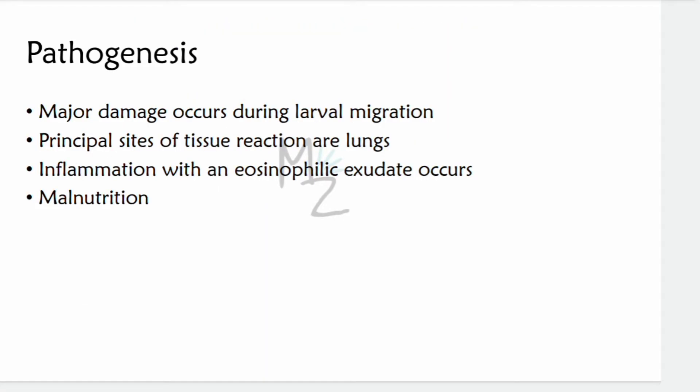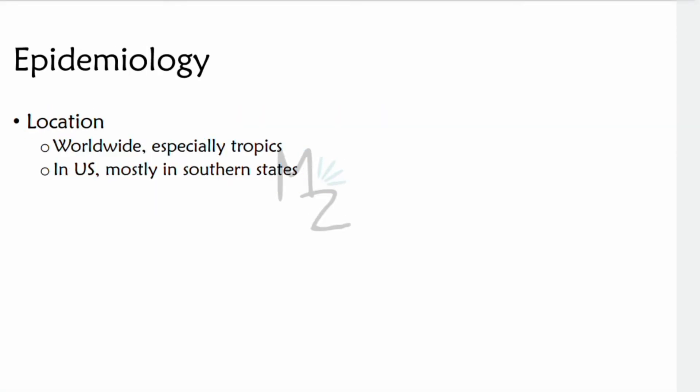Pathogenesis: the major damage occurs during larval migration rather than from the presence of adult worms in the intestine. The principal sites of tissue reaction are the lungs, where inflammation with an eosinophilic exudate occurs in response to larval antigens. Because adults derive nourishment from ingested food, a heavy worm burden may contribute to malnutrition, especially in children in developing countries. Ascaris infection is very common, especially in the tropics, where hundreds of millions of people are affected. In the United States, most cases occur in southern states.